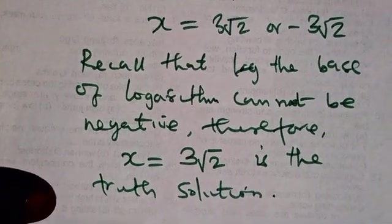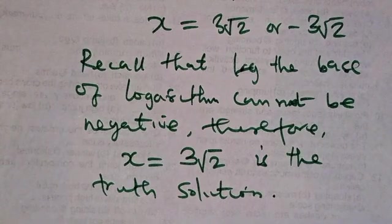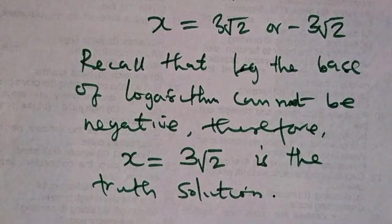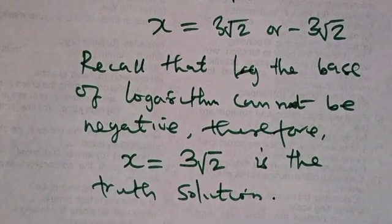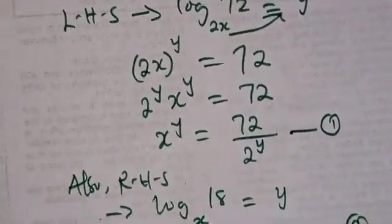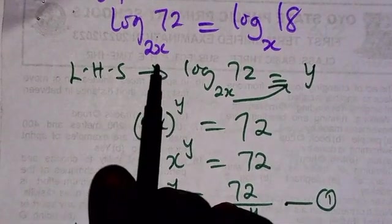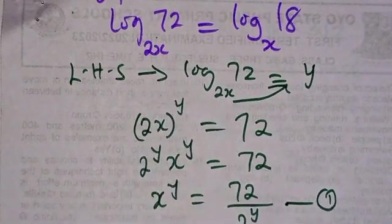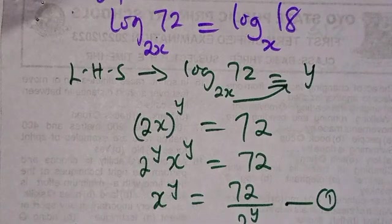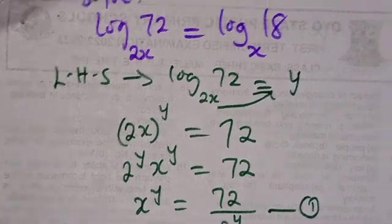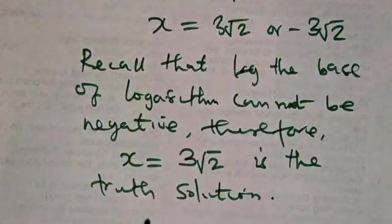Because we cannot have a negative solution, the base cannot be negative. When you look at this equation here, you can see that x is found to be the base. So we cannot have a negative base. That is why we consider the positive value of x.